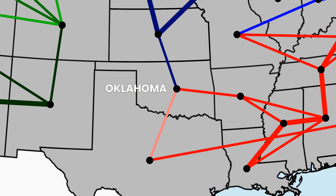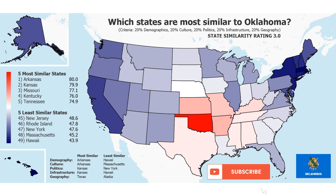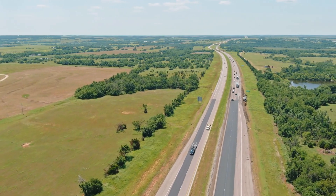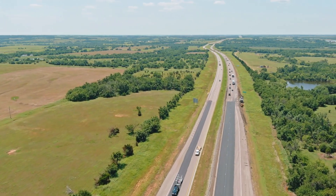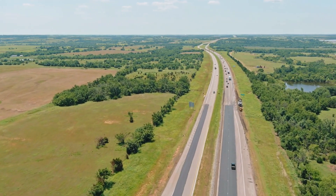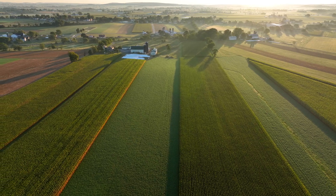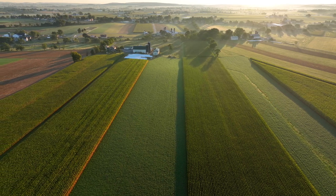Like Missouri, Oklahoma is another transitional state between the Midwest and the South. Its two most similar states are Kansas and Arkansas. Like many Midwestern states, especially in the Great Plains, Oklahoma is fairly flat, and the bulk of its land is used for agriculture.